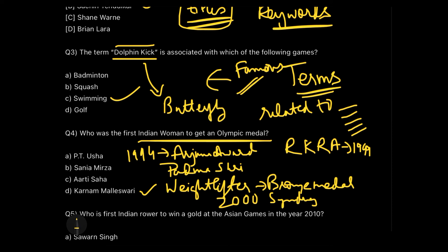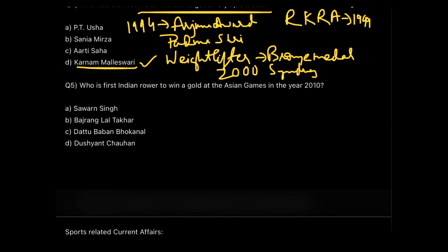Karnam Malleswari is the first Indian woman to get an Olympic medal — a huge name to know. When dealing with people in current affairs, like Karnam Malleswari, PT Usha, Saina Mirza, or Aarti Saha, just refer to the first paragraph of their Wikipedia page — all the important information is there. If you're preparing for this upcoming TISNET or CMAT examination, don't waste time reading entire articles.